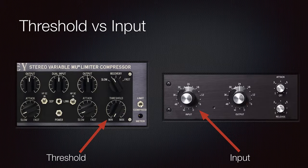In most compressors the user can adjust the threshold, but in some models the threshold is fixed and the user can adjust the input level instead. In this case a higher input will give us more compression. In other designs we can adjust both. In those cases, my recommendation is to set the input to 0 dB and use the threshold to adjust the amount of compression.